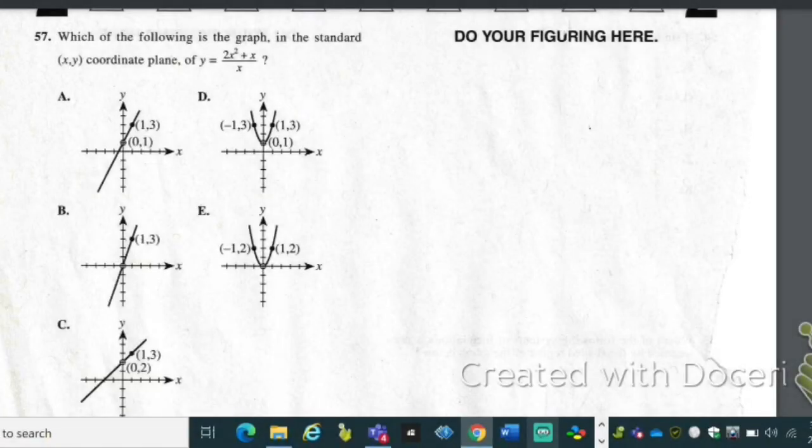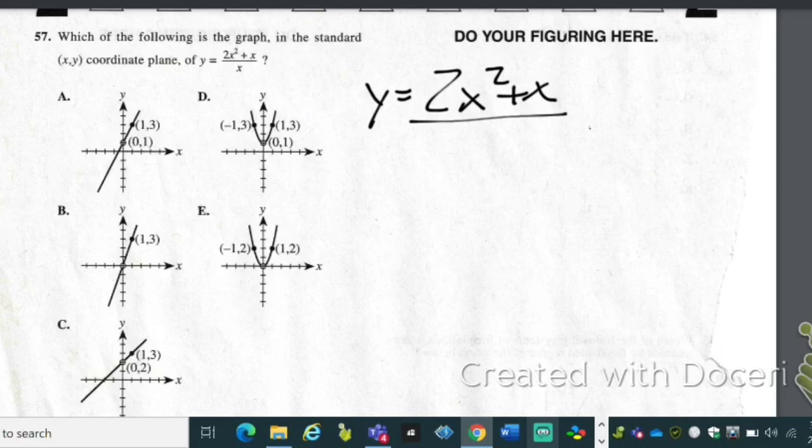Alright, number 57 asks which of the following is the graph in the standard xy coordinate plane of y equals 2x squared plus x all divided by x. So what you're going to do here is take the greatest common factor out of the top numerator.